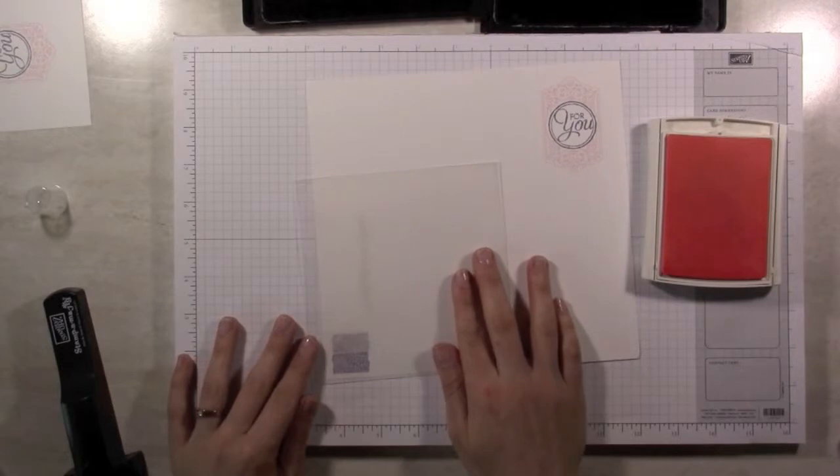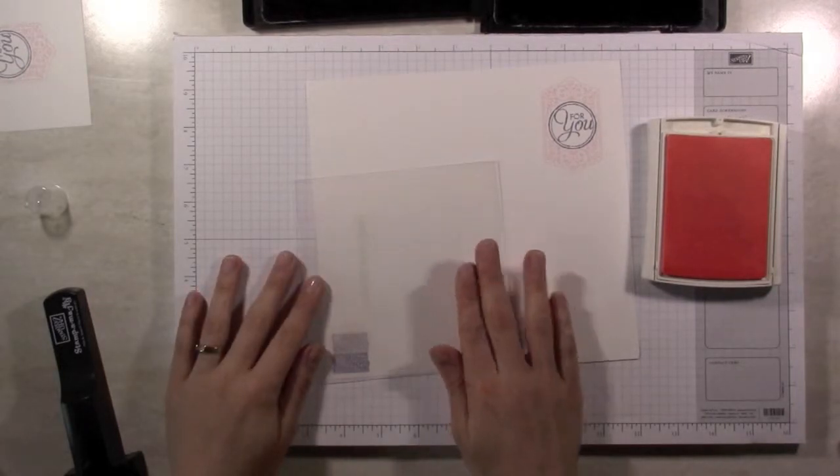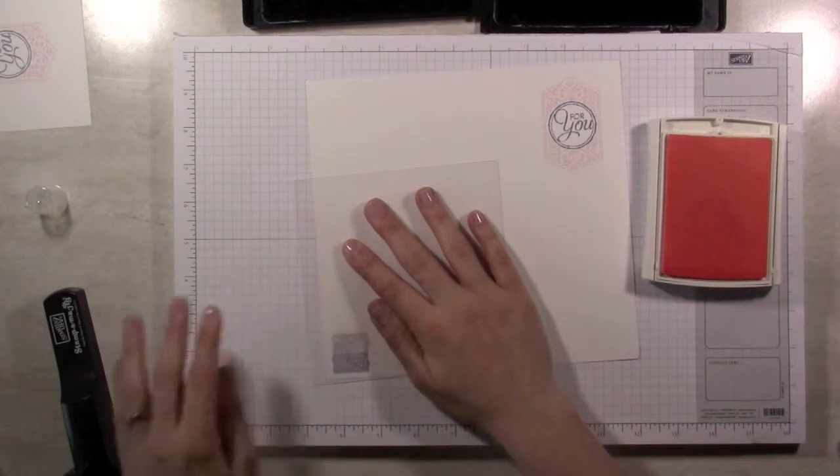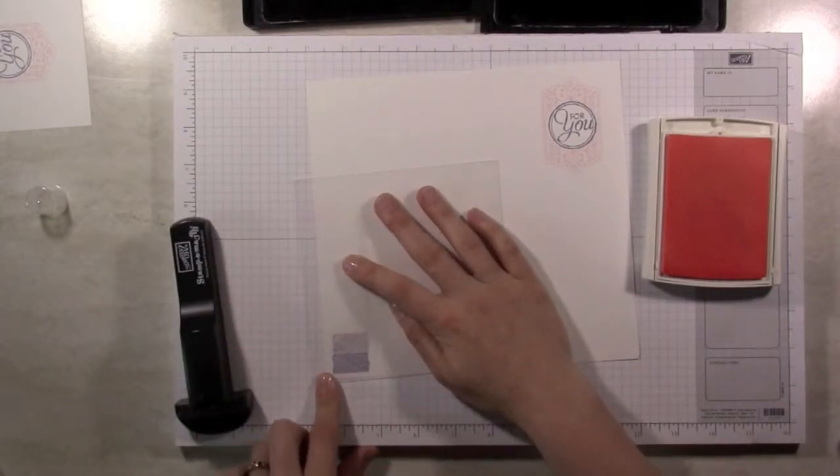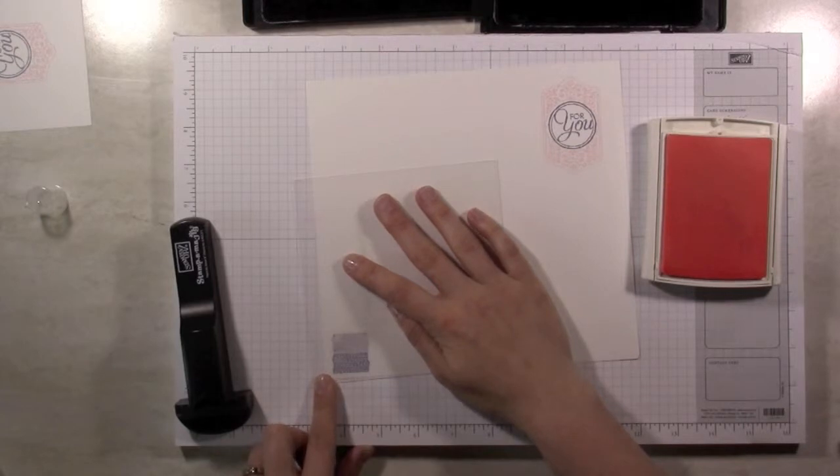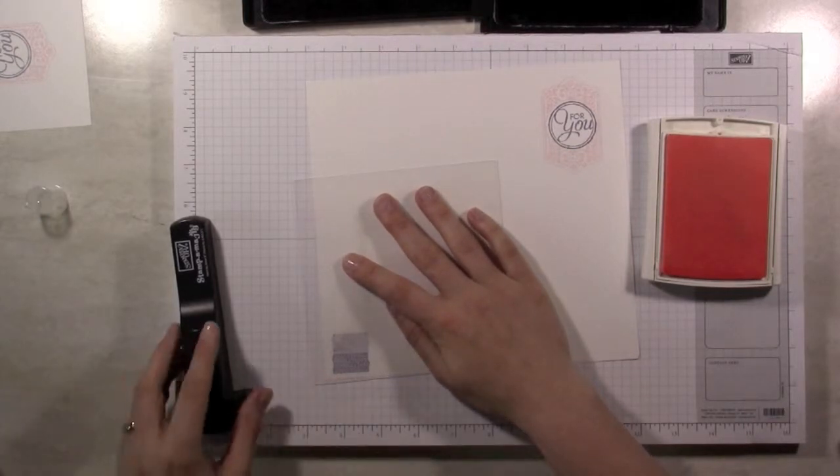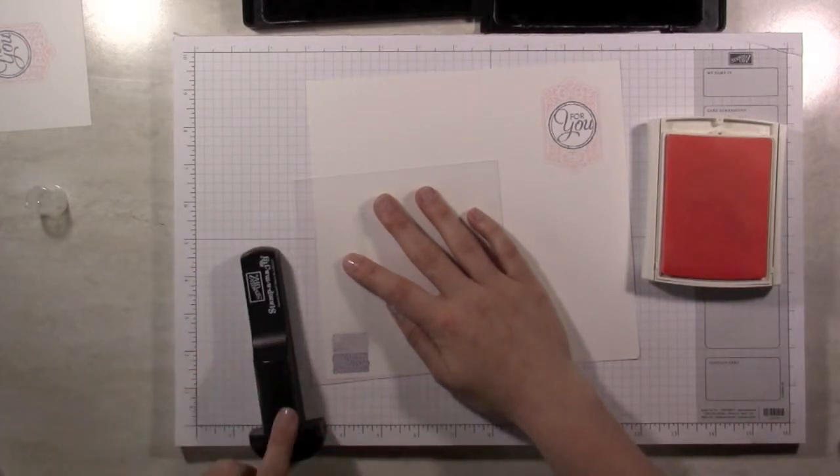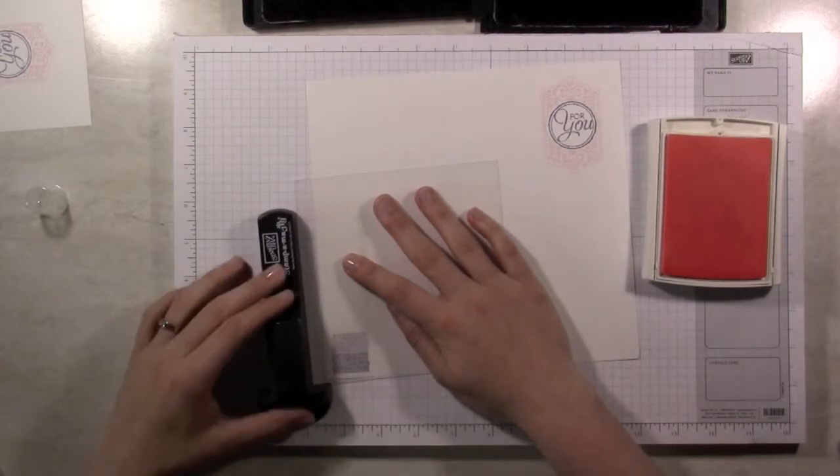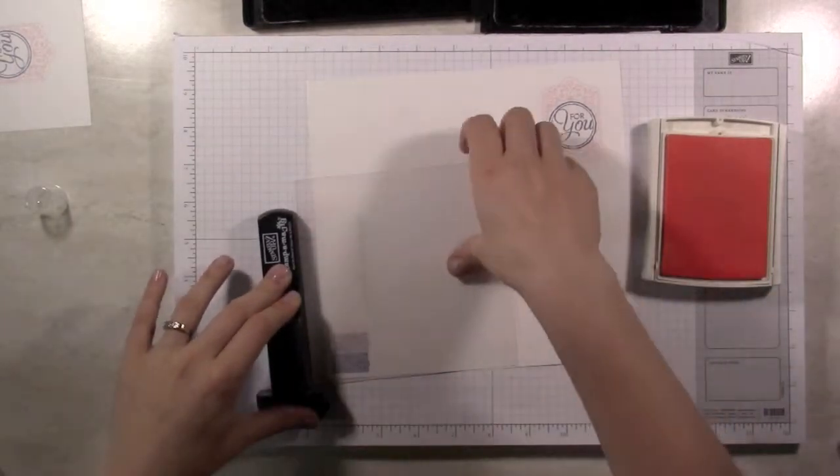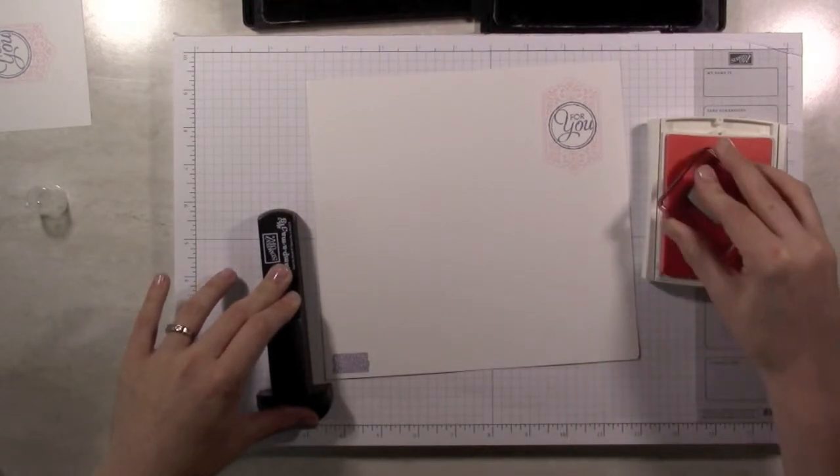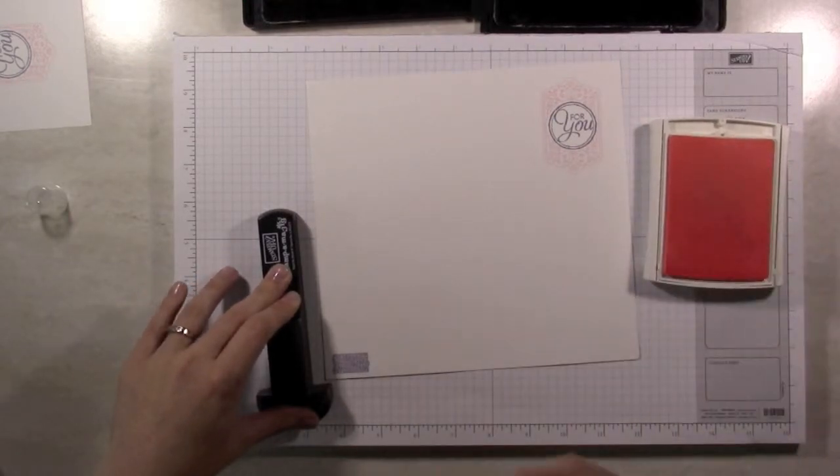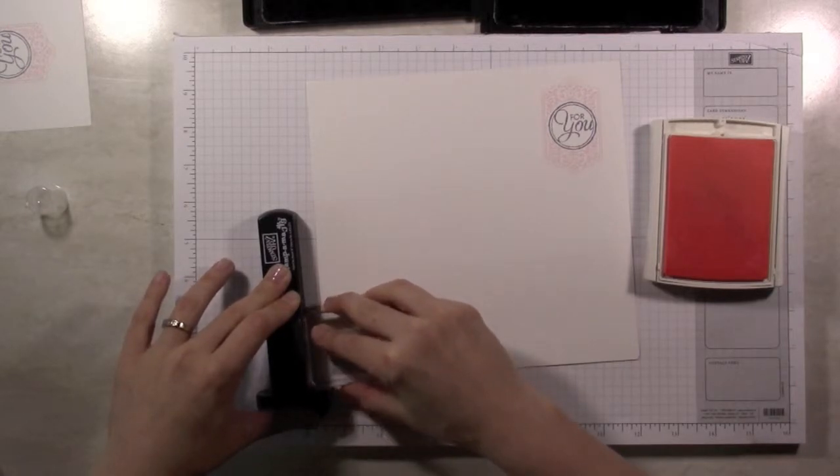So it's nice even for completely clear stamps sometimes to sit here and plan it out. Okay so once again I line it up where I want it. It looks pretty good. Okay now I bring my corner back in. Once I've done that I carefully lift the sheet, ink my stamp, and stamp it.